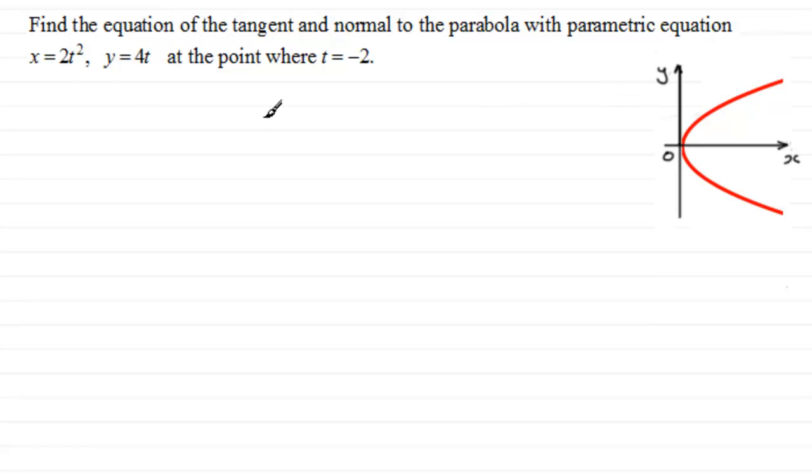For this example, we've got a parabola which has the parametric equation x equals 2t squared, y equals 4t, and we've got to find the equation of tangents and normals at the point where t equals minus 2.